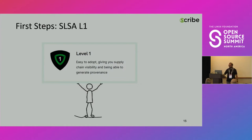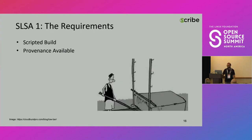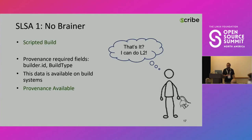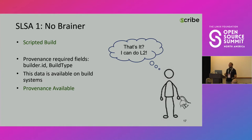The first steps are SALSA level 1. SALSA level 1 is easy to adopt and creates some visibility. Two requirements for SALSA level 1: it should be a scripted build and the provenance should be available. When I think about implementing it, there's nothing to implement since the pipelines I've chosen are already pipelines — so they are scripted. Of course it could have value for the legacy non-scripted pipelines, but that's not the mainstream of projects in our company.